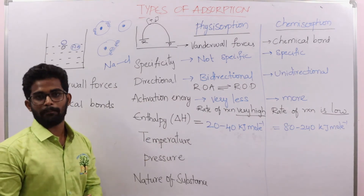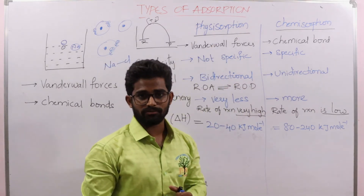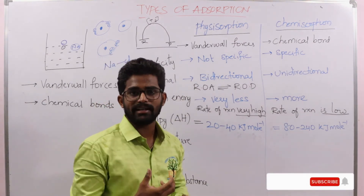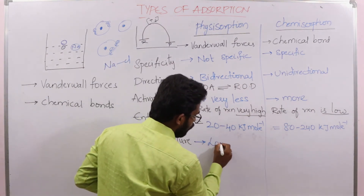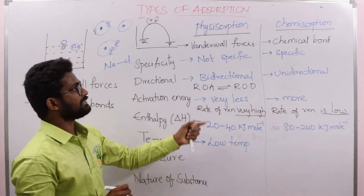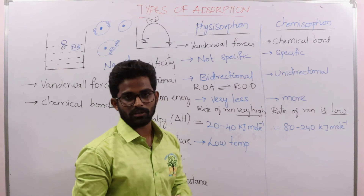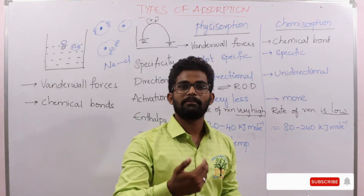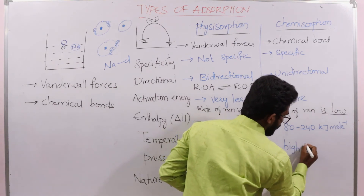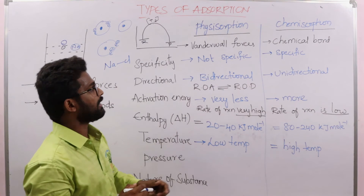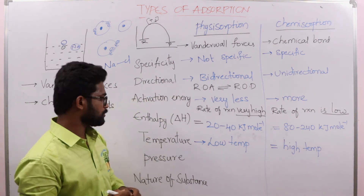Next, dependence on temperature. In physisorption, van der Waals forces are more readily created at low temperatures, so low temperature is the favorable condition. In chemisorption, bond breaking and bond making steps are involved, so it mainly occurs at high temperatures. High temperature is favorable for chemisorption, while low temperature is favorable for physisorption.